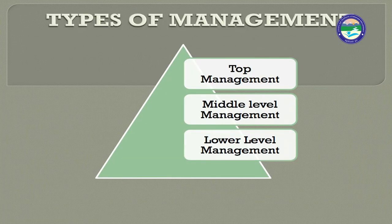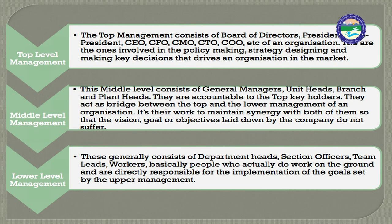Coming to the types of management — in any organization, teen levels hote hain management ke. First is top management, then middle level management, then lower level management. The top management consists of the board of directors, president, vice president, CEO, CFO, CMO, CTO, etc.